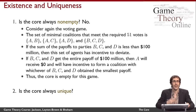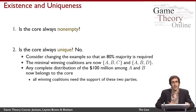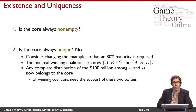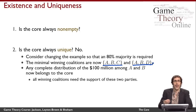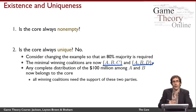The second question is: when the core is not empty, is it unique? Again, the answer is no. Consider changing the voting game to require an 80% majority instead of 51%. The only minimal winning coalitions are now two specific coalitions, and A and B are required in all winning coalitions. This means any complete distribution of the $100 million between just A and B belongs to the core, because C and D — even if paid nothing — cannot form any coalition that would pay them more. So the core is not unique here.